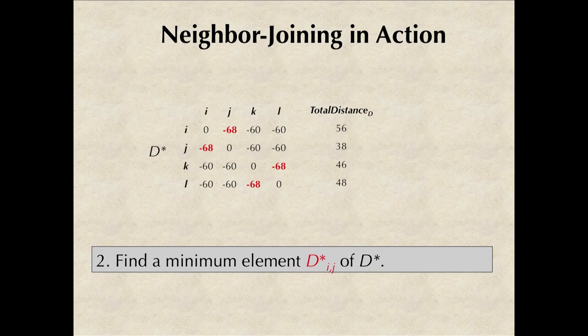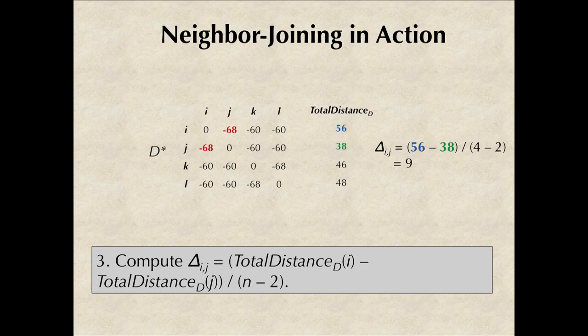Let's work with I and J. We set delta_IJ equal to the total distance of I minus the total distance of J, all divided by n minus 2. When we plug those values in, we see that delta_IJ is going to be equal to 9.